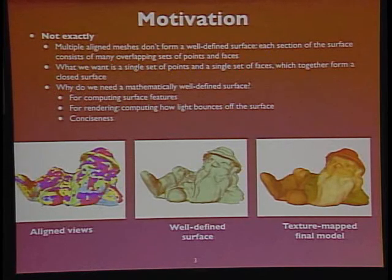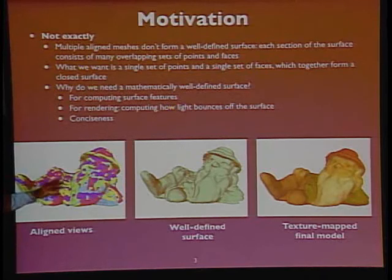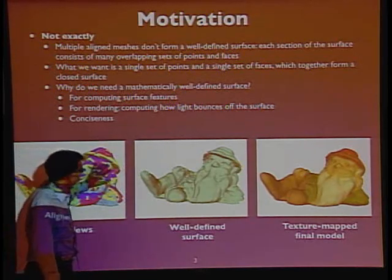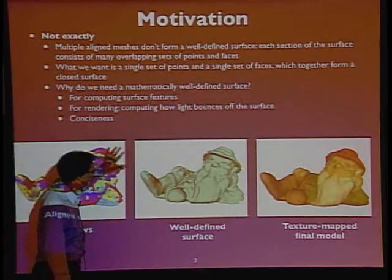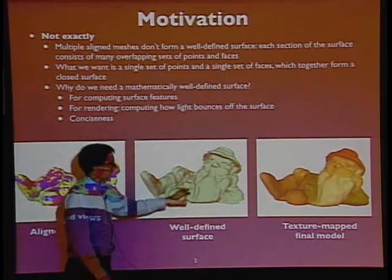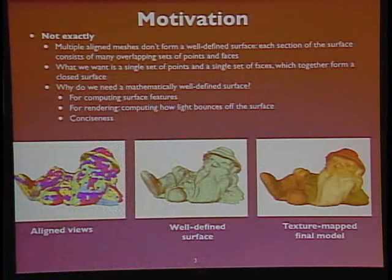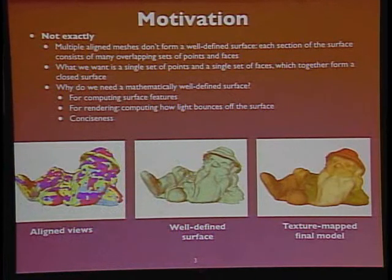This gives an example of what we're going to do today: going from a set of overlapping views of the object to a merging of all disparate point sets into one unified one. Once you do that, you can texture map it using color information from your sensors, or color it in yourself.